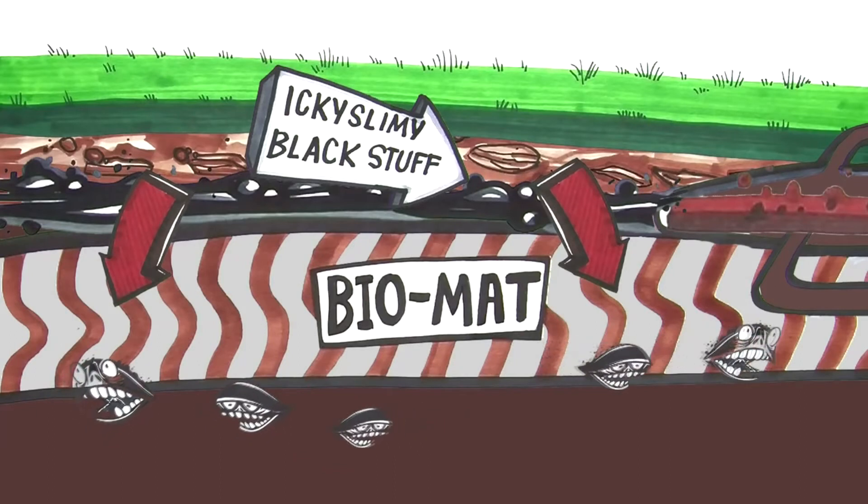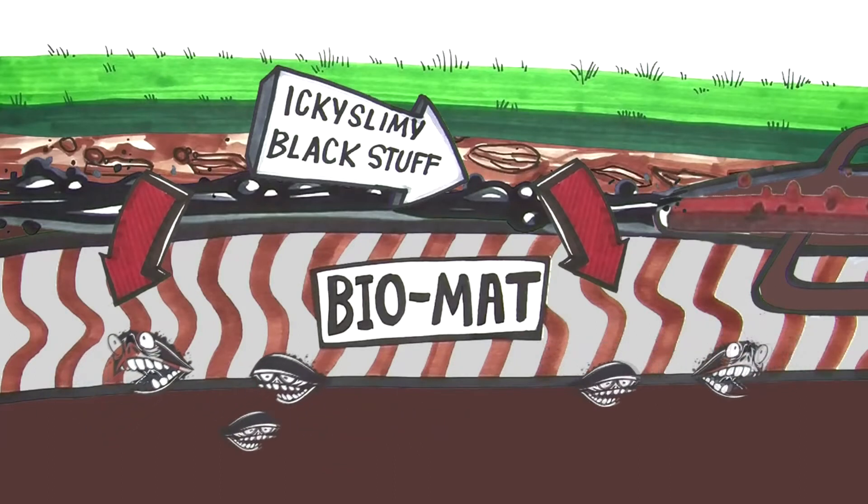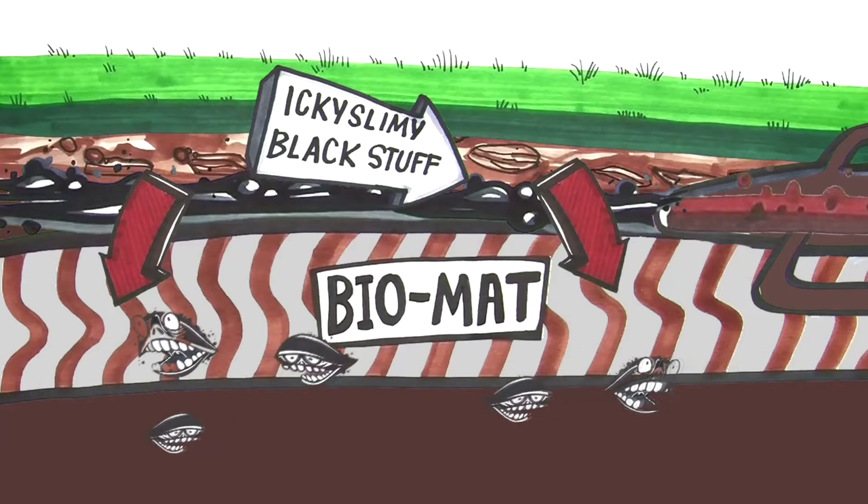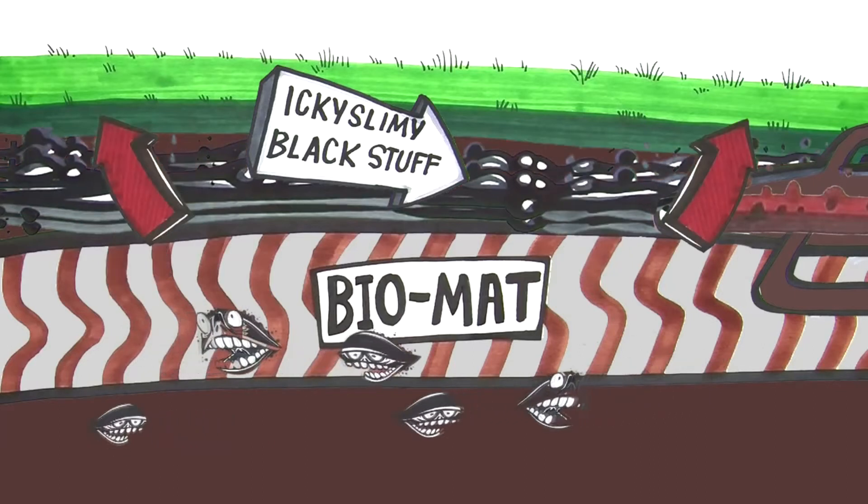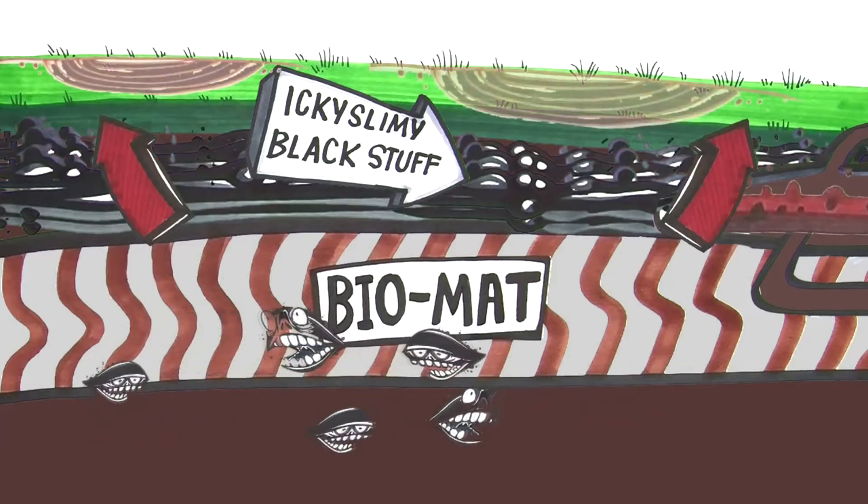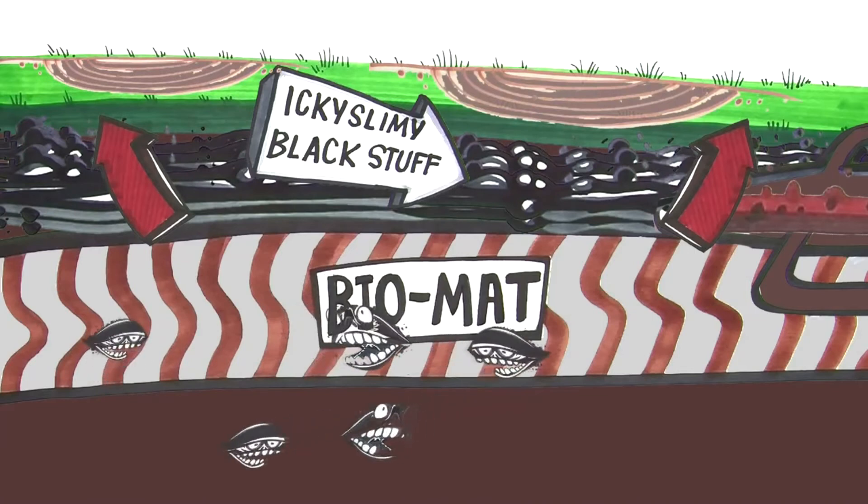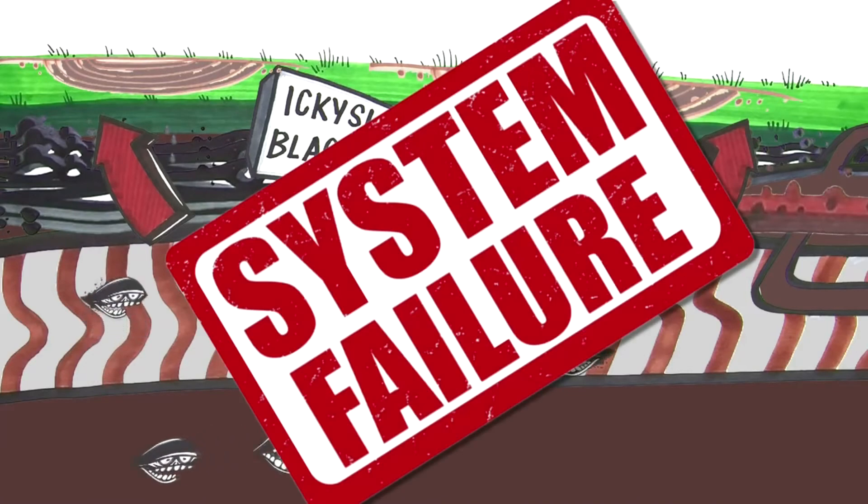Wastewater flows through the biomat as part of the cleaning process. Problem is, after a while, there's too much black, slimy stuff. The biomat grows thicker. Too thick, it clogs, and your system fails.